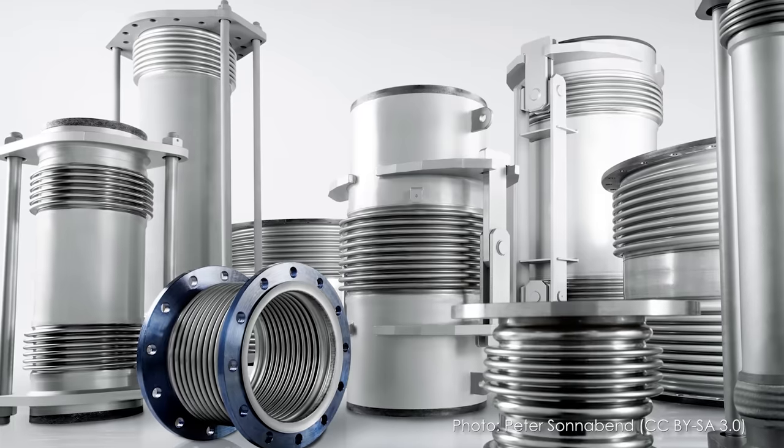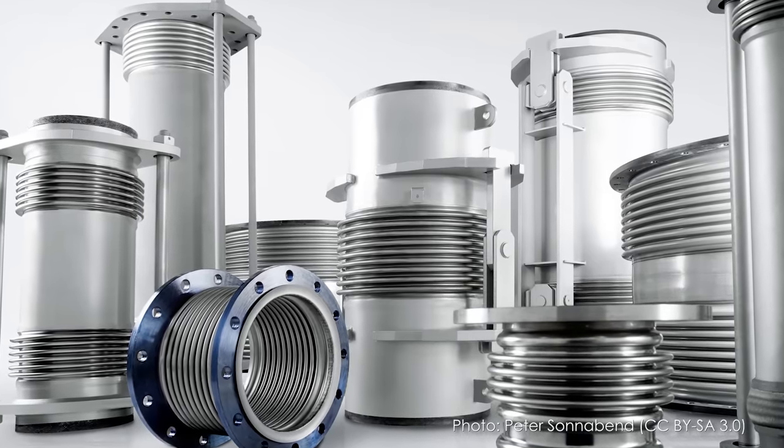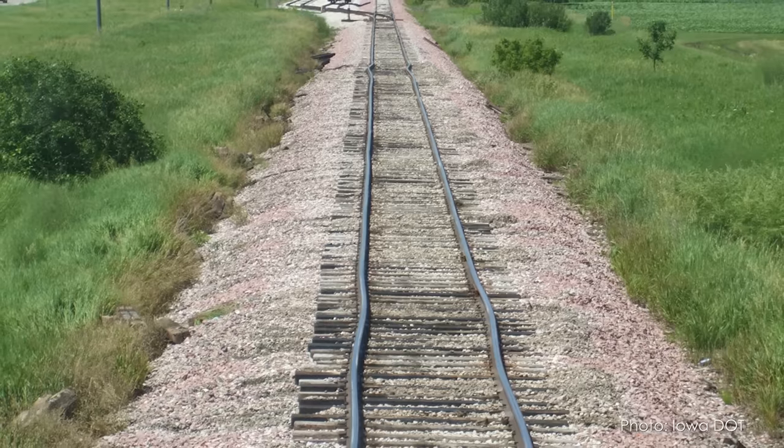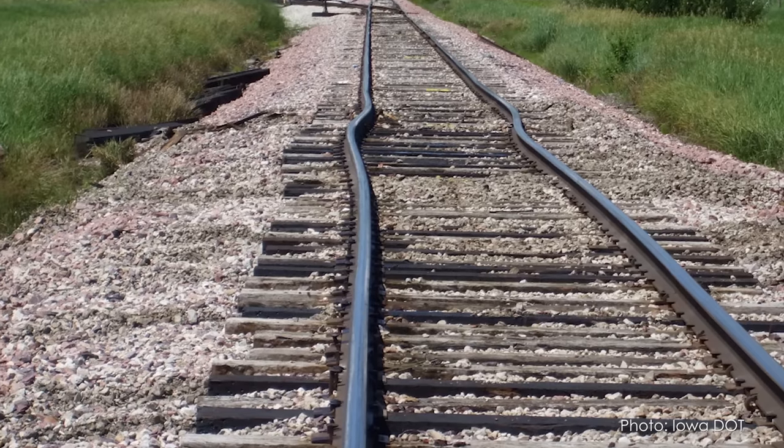But what about structures that are longer than a city block? Thermal movement scales with length, so engineers need to take more care with linear infrastructure. Long runs of pipe, especially if they experience fluctuating temperatures, need expansion joints to prevent damage. The rails for trains can experience sun kink, where a hot day can actually buckle the steel.